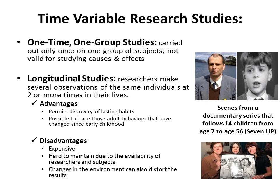One of the most famous longitudinal studies — which didn't begin as one — is a documentary series called Seven Up. In 1964, a filmmaker was interested in studying the socioeconomic ladder of England, interviewing 14 different children to see if they could break out of their socioeconomic status. They interviewed kids from an orphanage, working class families, middle class families, and upper class families. Every seven years, they went back and filmed interviews with these 14 children.